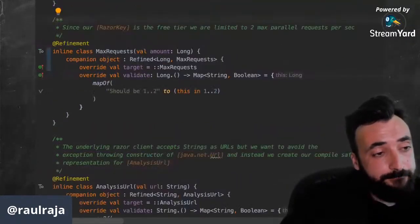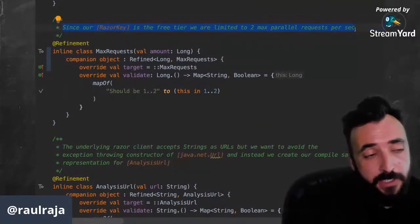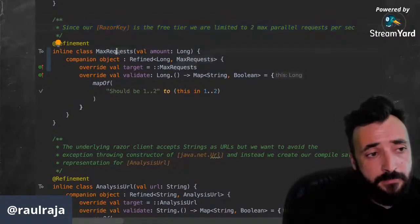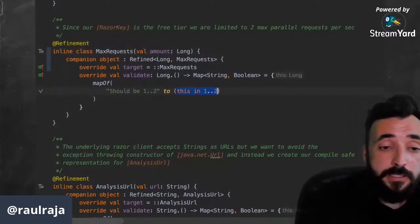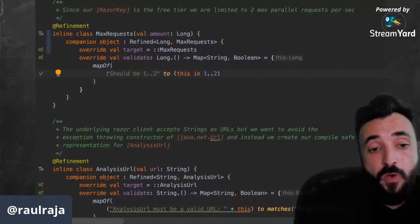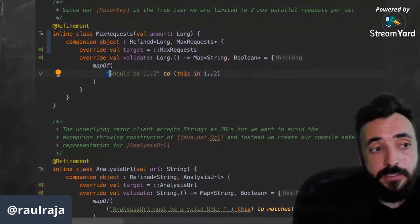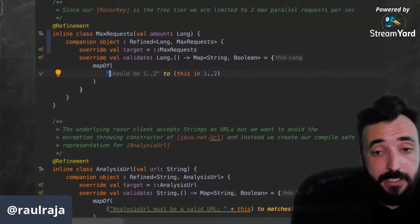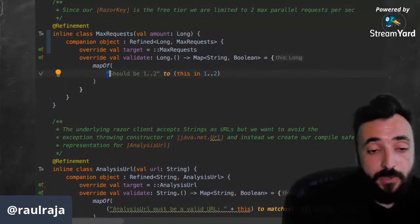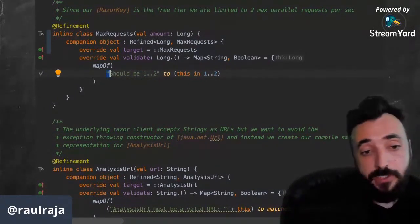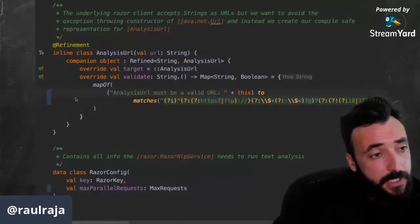Here is another example. This API, because we are using the free key, we cannot do more than a couple of requests in parallel. So here we're yet adding another predicate. And in this predicate we are constraining that the only range of value has to be one or two, which is what we can use in the free API. So we are using the enhanced type max request, which is an inline class and has potentially minimal cost for most cases, unboxed. For some others, it will have to, but it still gives us a super lean runtime, which is verified and checked at compile time.